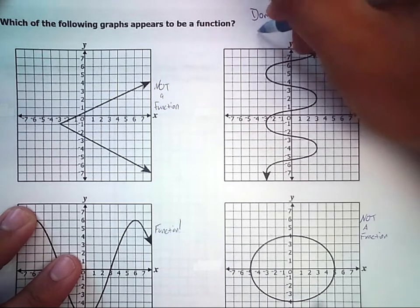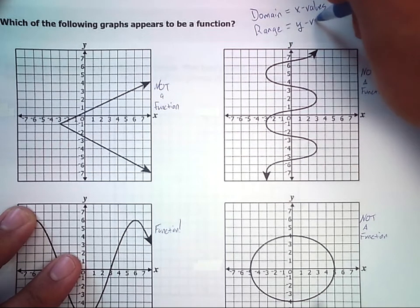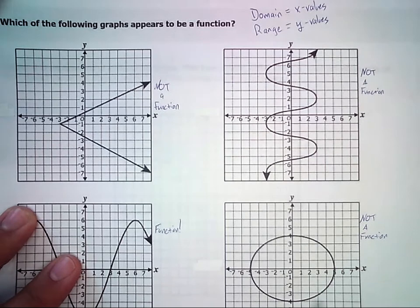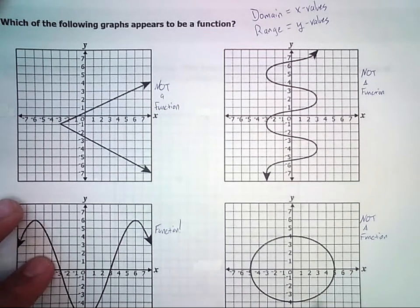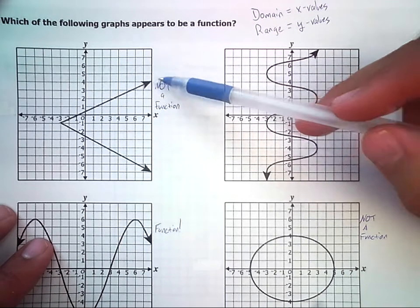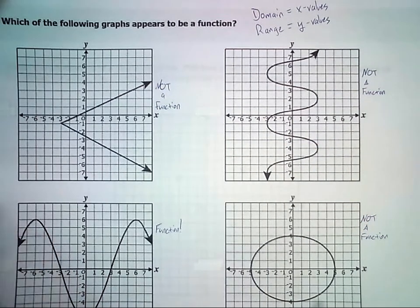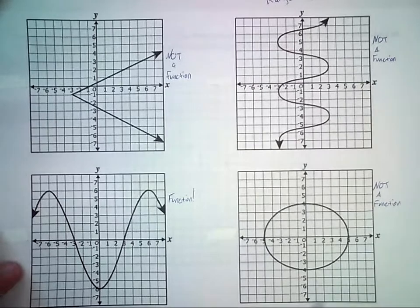Domain is x values, and range is y values. So what you want to think about is with these graphs, what are all the possible x and y values? You've got to be careful, because these arrows mean that they go forever. They can't be contained.